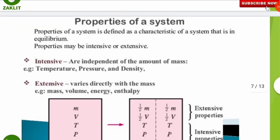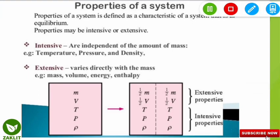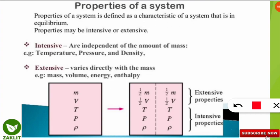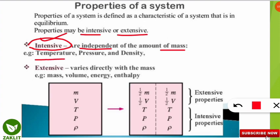Now let's know the properties of a system. A thermodynamic system can have intensive or extensive properties. Intensive properties are independent of the amount of mass — they do not change even if mass changes. Examples are temperature, pressure, and density. Extensive properties vary directly with the mass; examples include mass, volume, energy, and enthalpy.